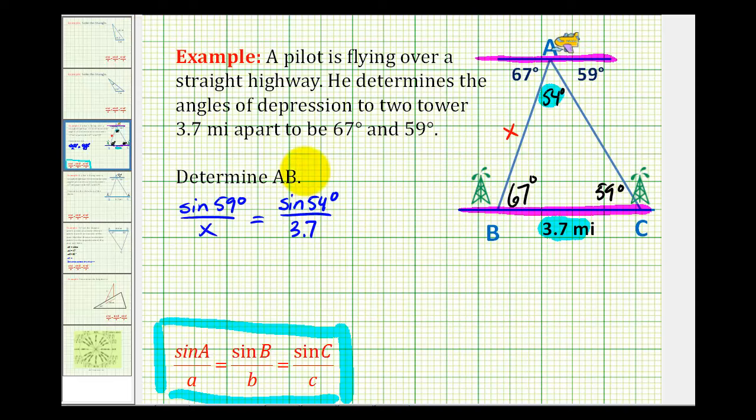And now we can cross-multiply and solve for X. So we'll have X sine 54 degrees must equal 3.7 times sine 59 degrees. And now we can divide both sides by sine 54 degrees to determine X. So we'll have X is approximately equal to this quotient.